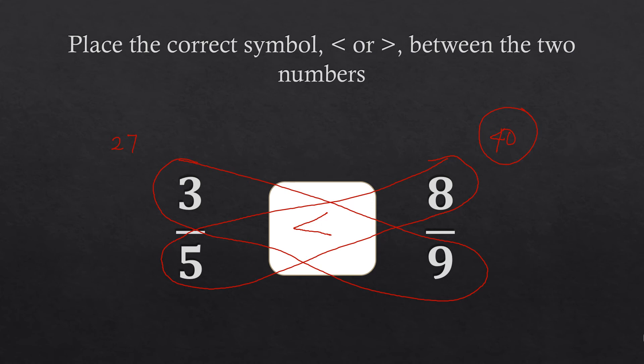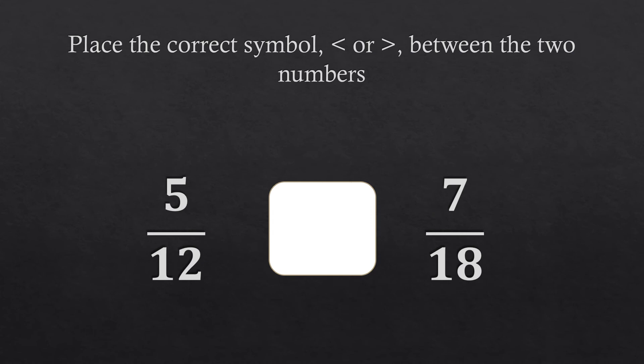Let's go to the next example. We have five twelfths and seven eighteenths. So again, we are going to draw our butterfly wing, and then on the other side as well. And then we are going to multiply each number on the same wing. So we have five times eighteen, that will be equal to ninety, so we write ninety here. And then we have twelve times seven, that will be equal to eighty four, so we write eighty four in here.